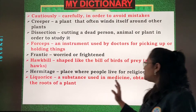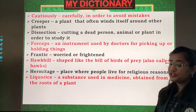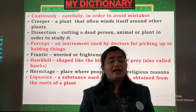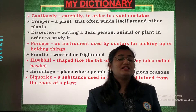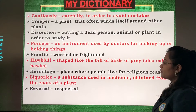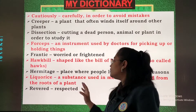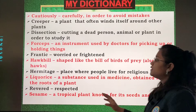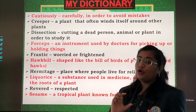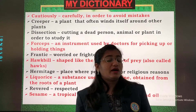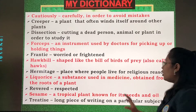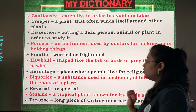Licorice: a substance used in medicines, obtained from the roots of a plant. Plant ke roots se jo substance medical use ke liye nikala jaaye, it is known as licorice. Revered means respected. Sesame: a tropical plant known for its seeds and oil — in mein se oil nikala jaata hai aur inke seeds bhi kaam aate hain. Then treatise means a long piece of writing on a particular subject — it is a piece of writing where you are writing about something.